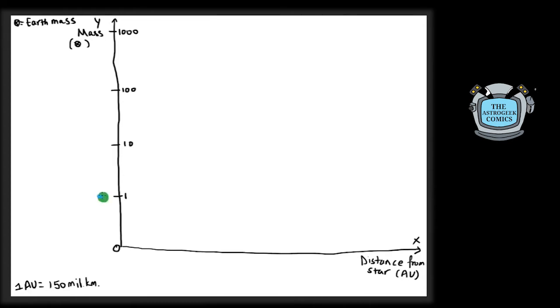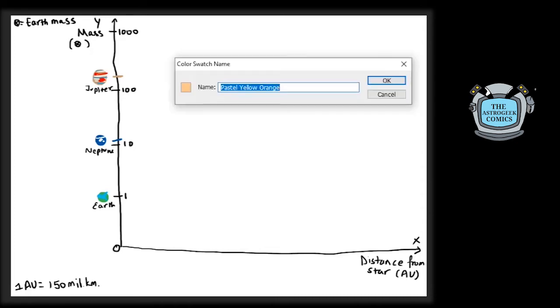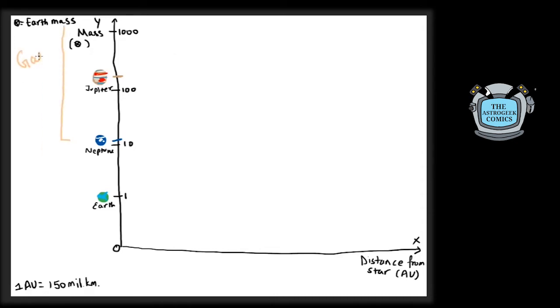Neptune is somewhere around 13 Earth masses, while Jupiter is around 317 Earth masses. In this graph of ours, planets over 10 times the mass of Earth are called gas giants.